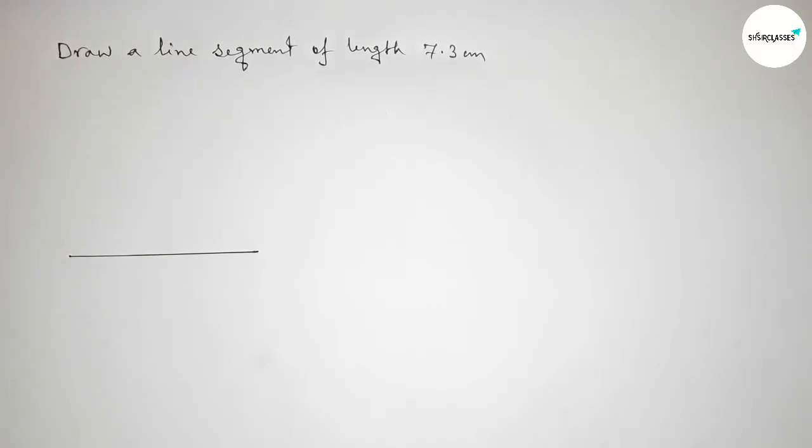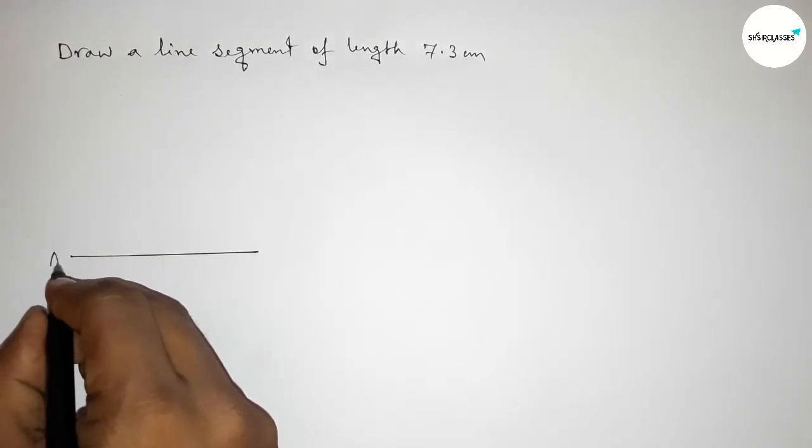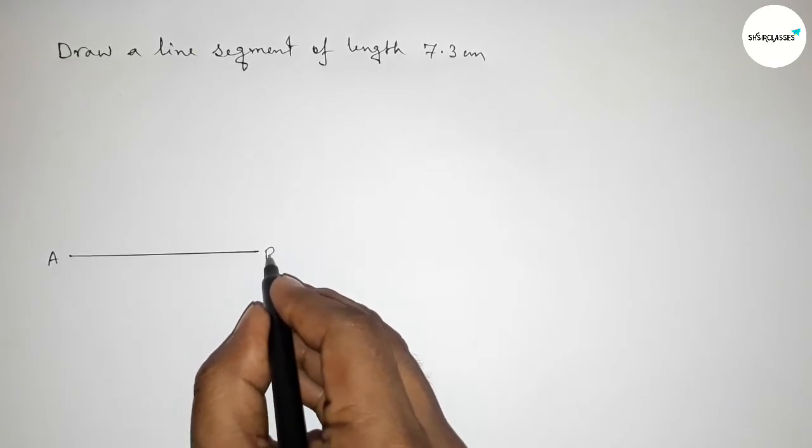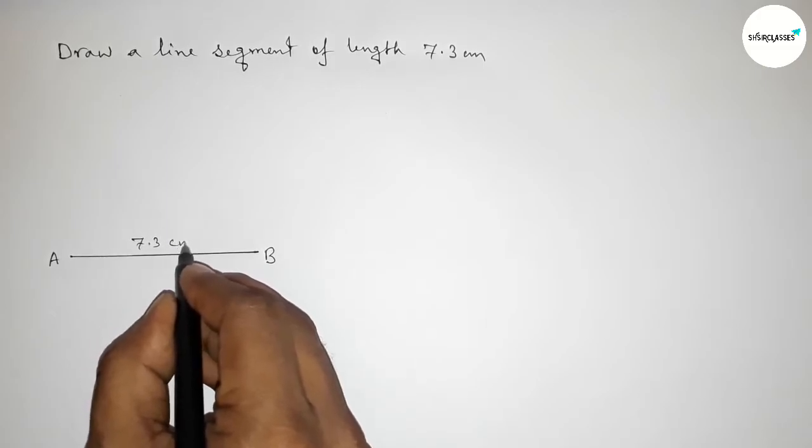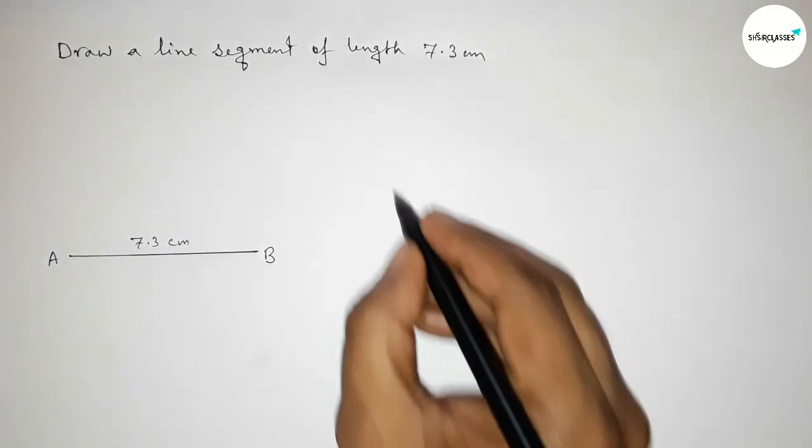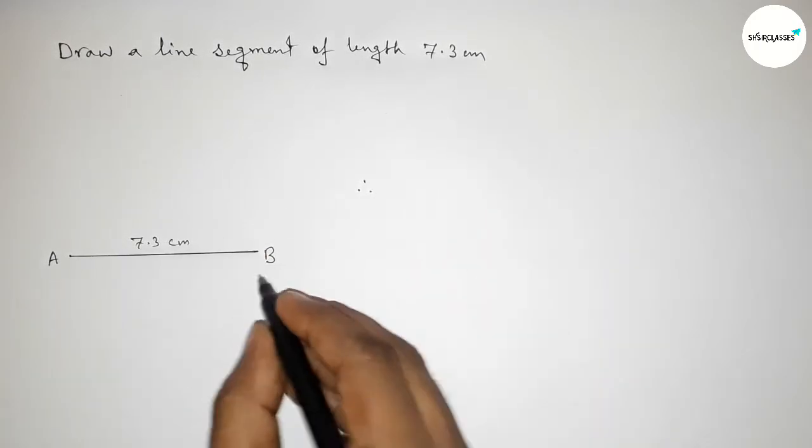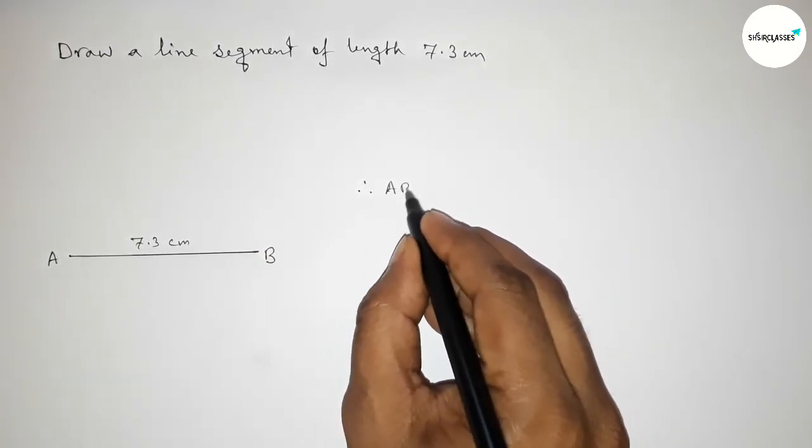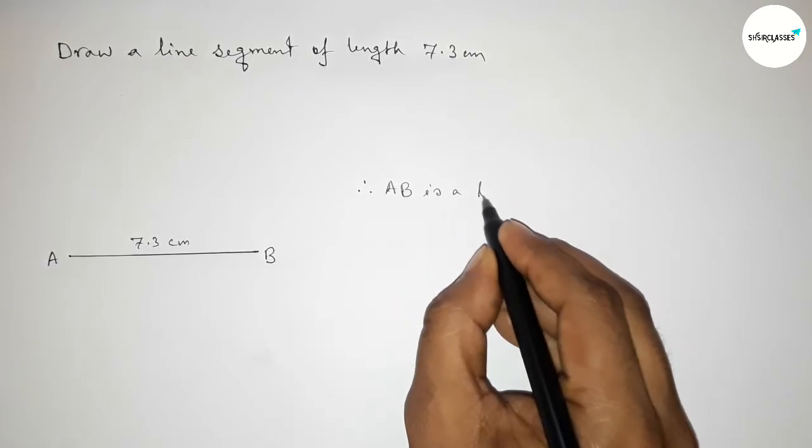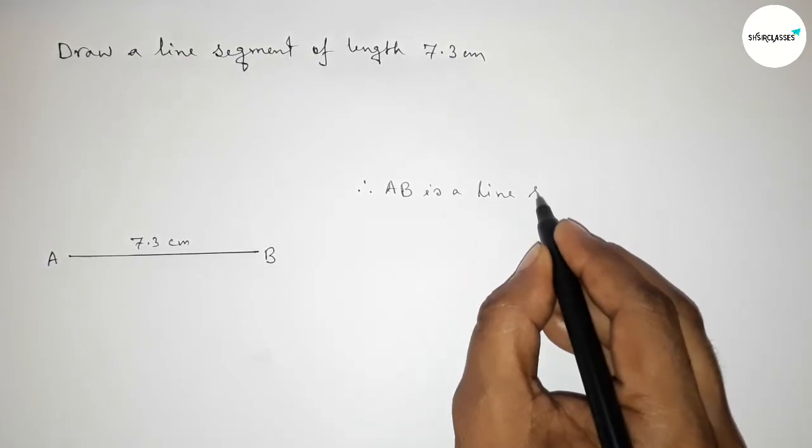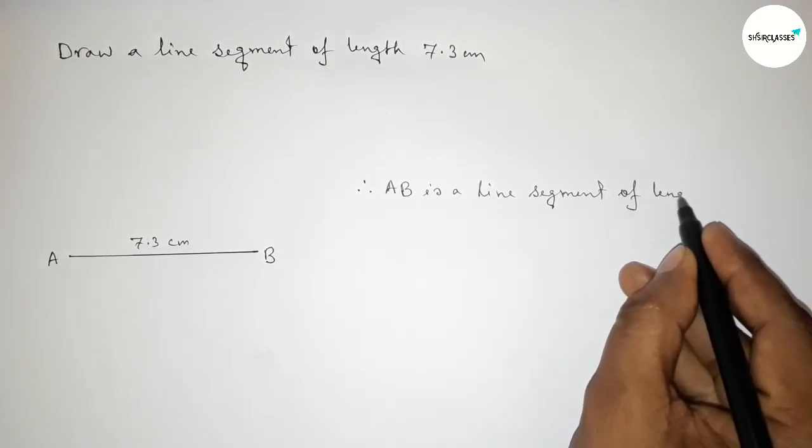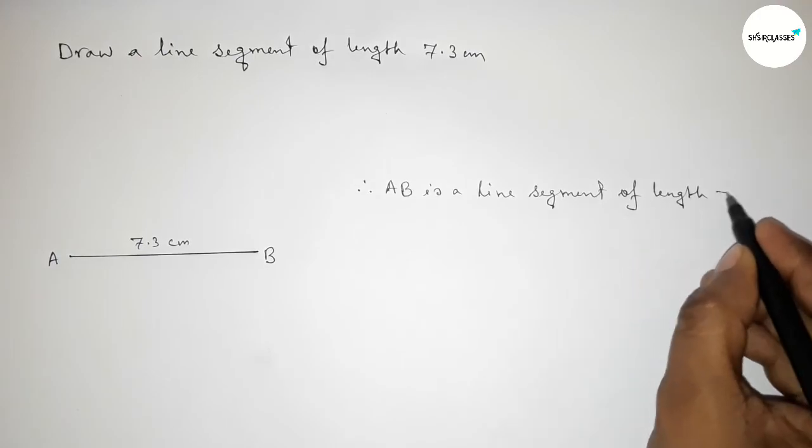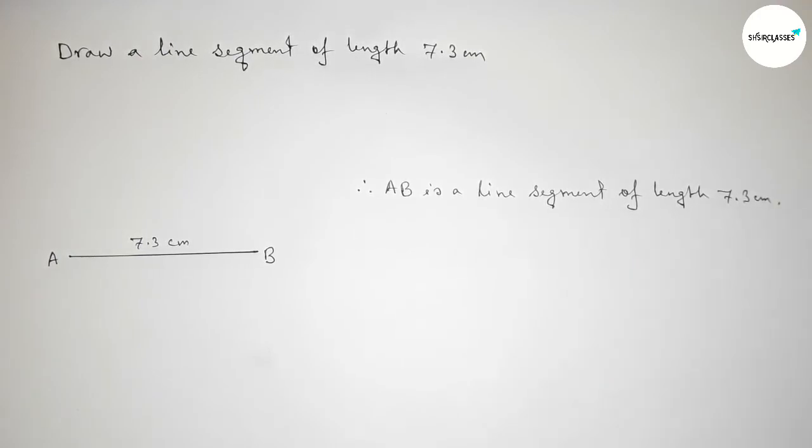Okay, so taking here point A and here B. So AB is a line segment of length seven point three centimeter. Therefore we can say that AB is a line segment of length seven point three centimeter, and with the help of scale you can draw this line by this way. So that's all.